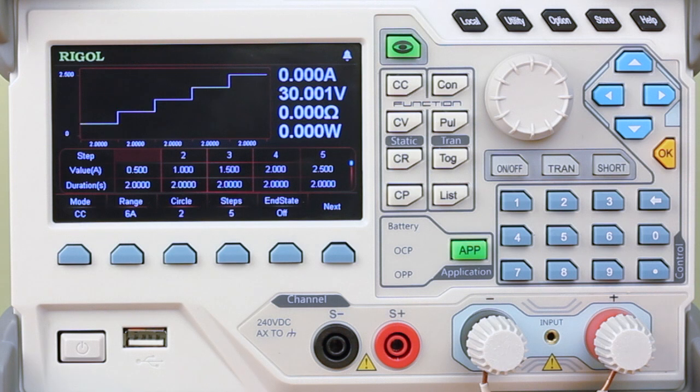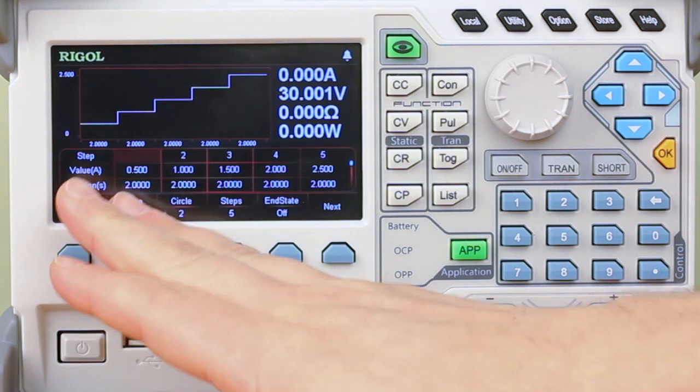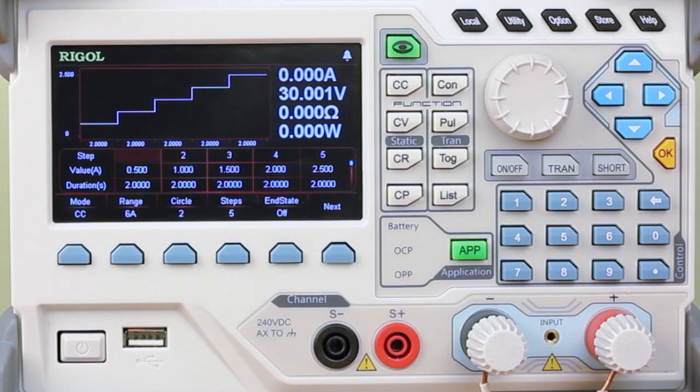The fourth mode in the transient modes is list. Here we have set a list from half an amp up to two and a half amps, a stair step of current. With each stair step you can measure current, voltage, power, and resistance.